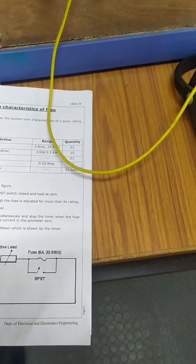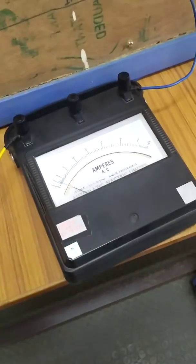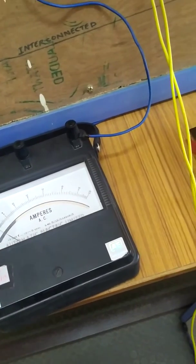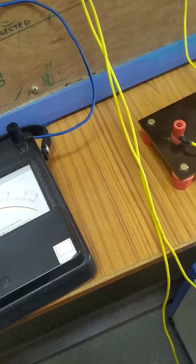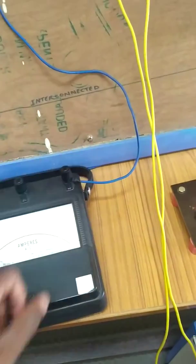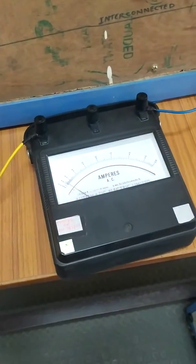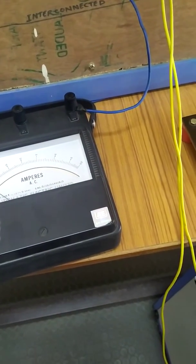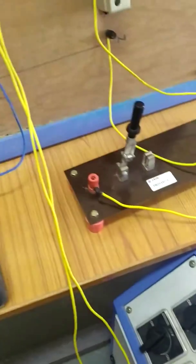Next, as per the circuit diagram, how to do the connections. First phase to ammeter connection. See here, phase to ammeter. From ammeter it is connected here, then the load. Next ammeter to the load resistive.